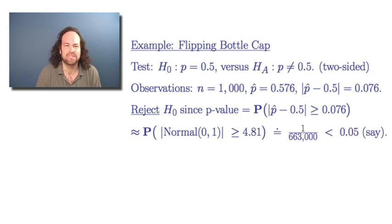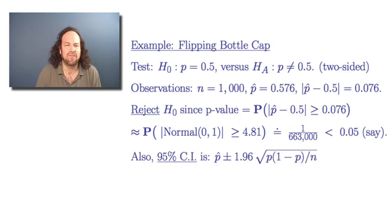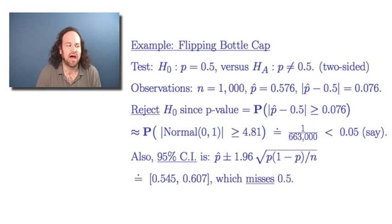As far as confidence intervals, that was kind of different. The 95% confidence interval was found by taking our estimated fraction p-hat plus or minus 1.96 — that magic critical value for the standard normal distribution — multiplied by the standard deviation, which was the square root of p times 1 minus p over n. That gave us a confidence interval from 0.545 to 0.607. And we notice that that confidence interval misses the value 0.5 — 0.5 is not in that confidence interval.